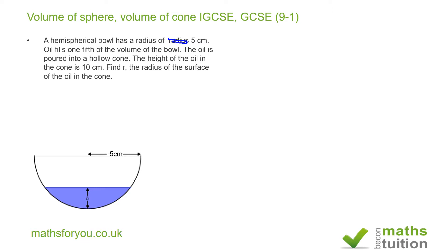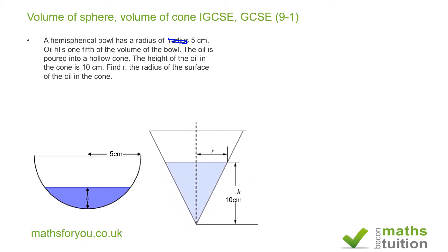The oil is poured into a hollow cone. The height of the oil in the cone is 10 centimeters, as shown. We need to find r — the radius of the surface of the oil in the cone.